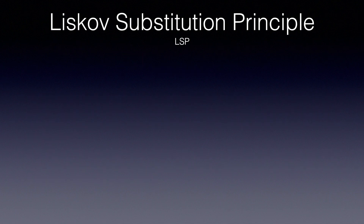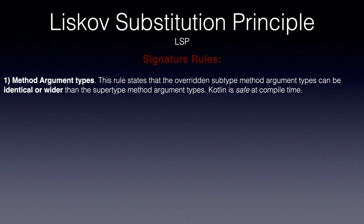Starting with the Signature rules — those rules have to do with the signature of the class's functions. Method argument types: this rule states that the overridden subtype method argument types can be identical or wider, which means more general, than the supertype method argument types. Kotlin is safe at compile-time, but generally the idea is simple: don't give more specific arguments in the overridden methods. In Kotlin, you have to give the same type exactly as an argument, or you'll get a compile-time error.